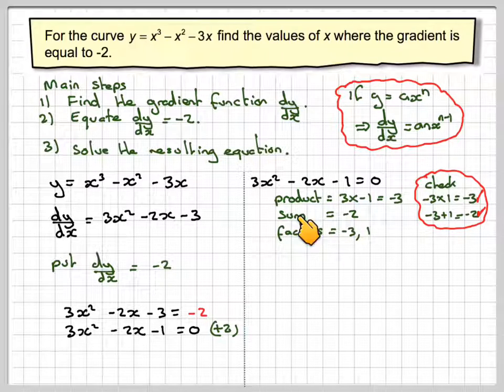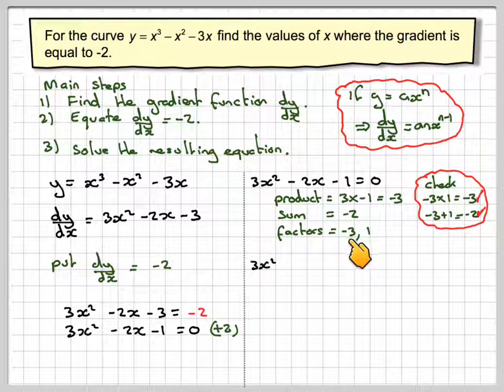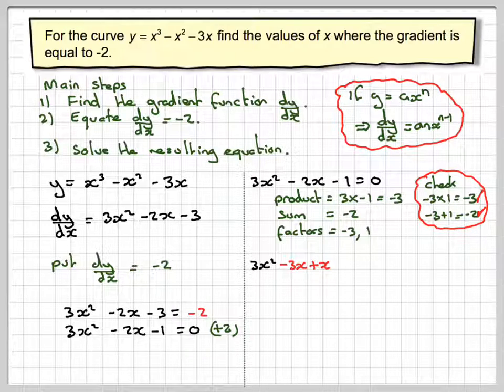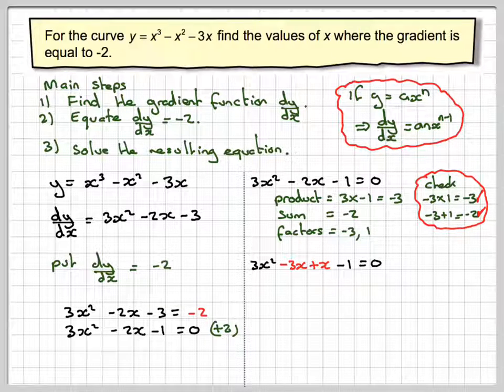So what we do now, we write down the quadratic and we start with 3x squared, and then the middle term becomes minus 3x plus x. We haven't changed the meaning, because minus 3x plus x makes minus 2x. Minus 1 is equal to 0.